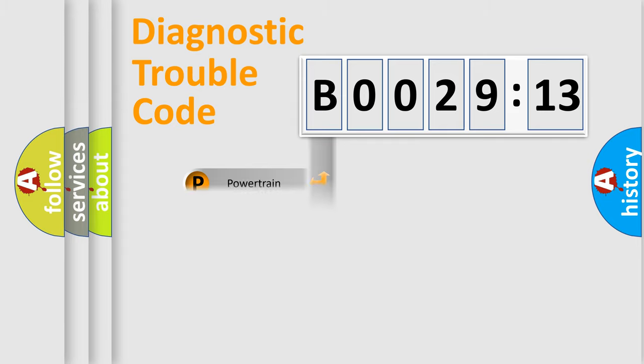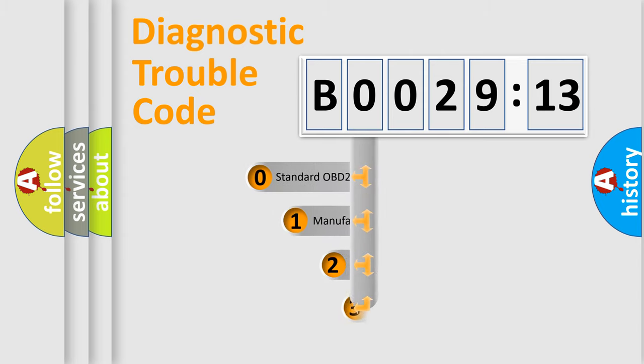Powertrain, Body, Chassis, Network. This distribution is defined in the first character code.